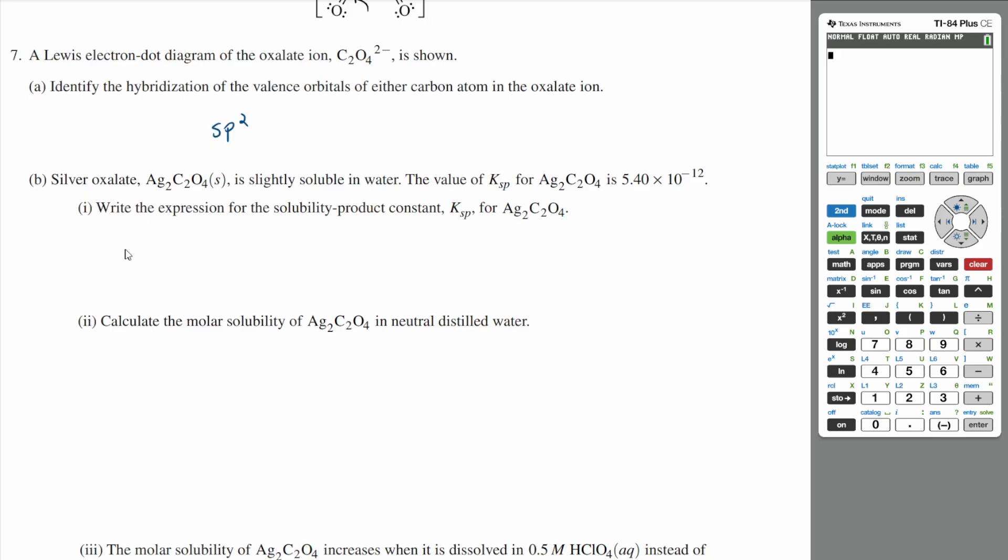If you look at how the silver oxalate would dissociate, it would dissociate into two silver ions and one oxalate ion.